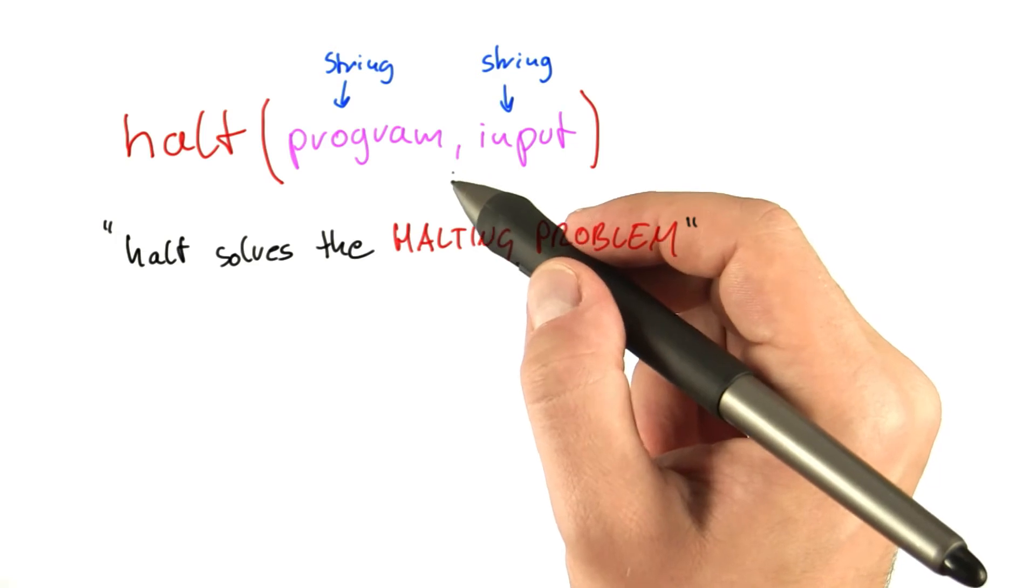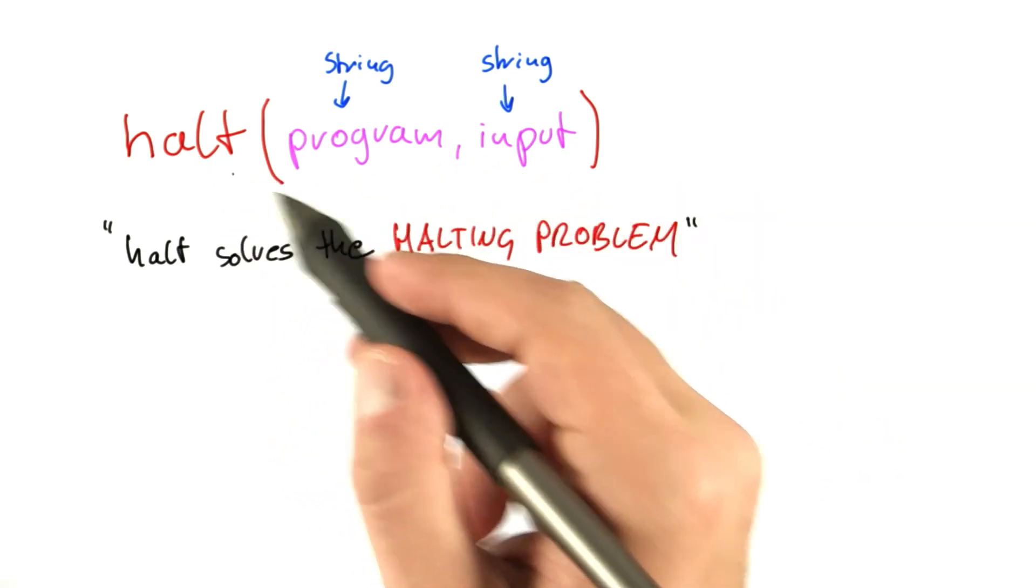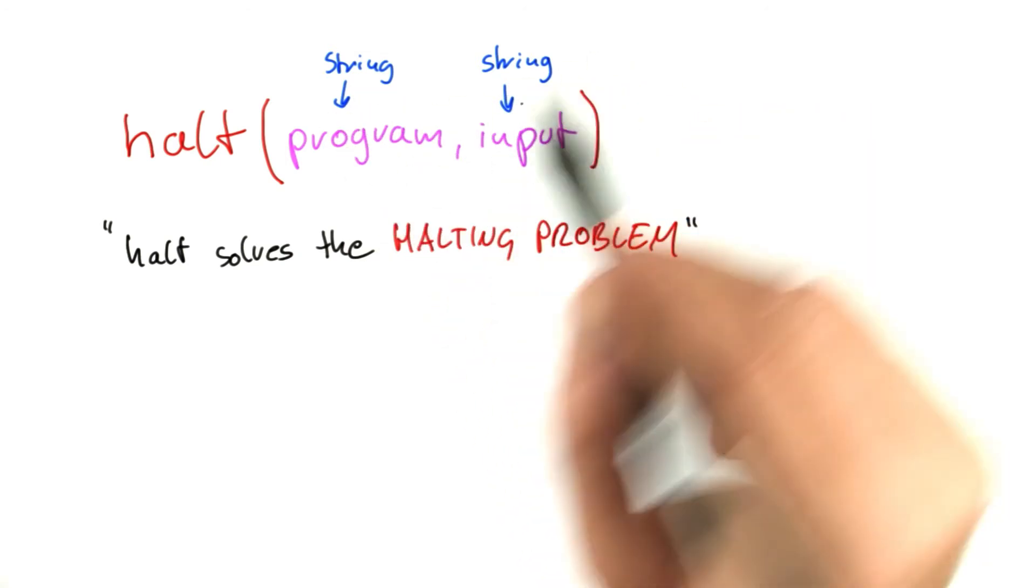So even in a thousand years, two thousand years, we don't care. As long as halt is guaranteed to solve this problem for any program and any input, then we're satisfied.